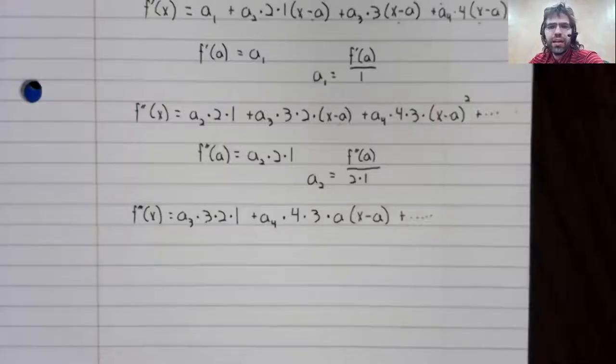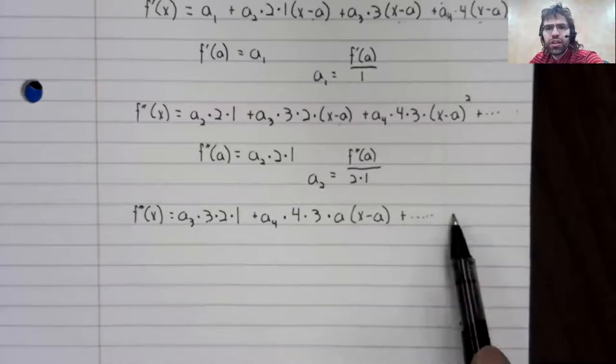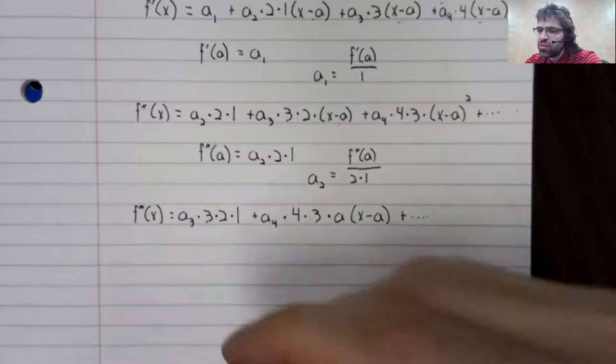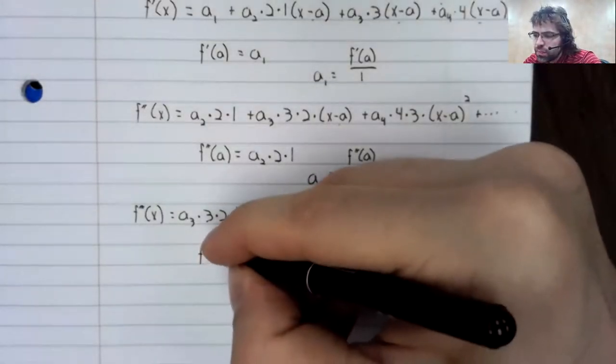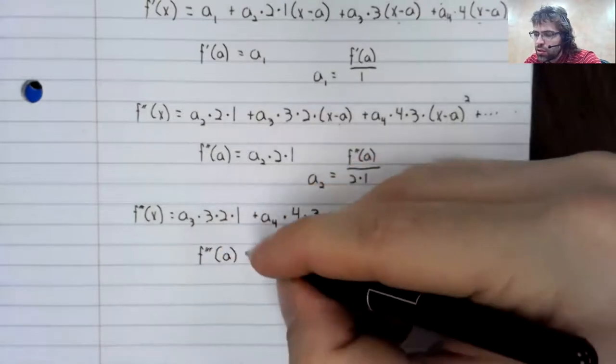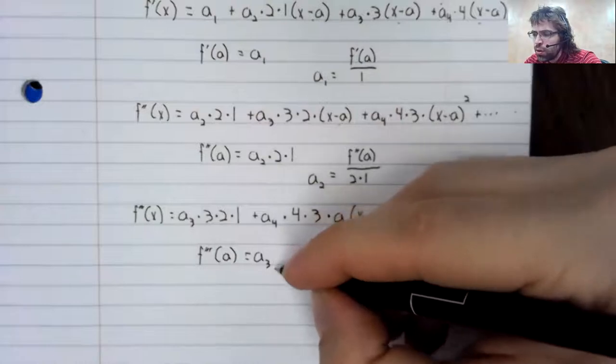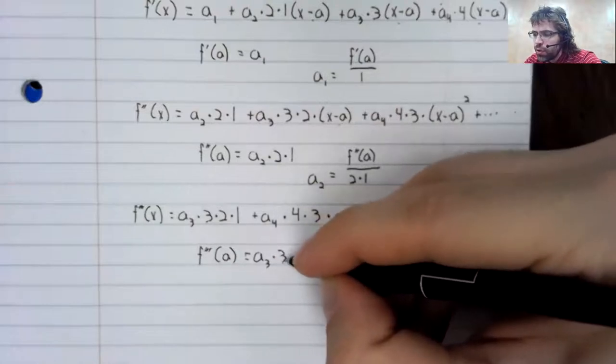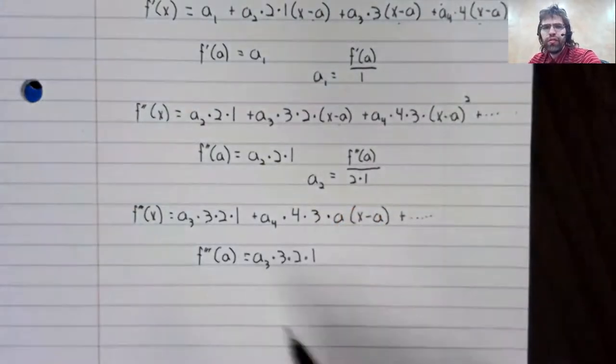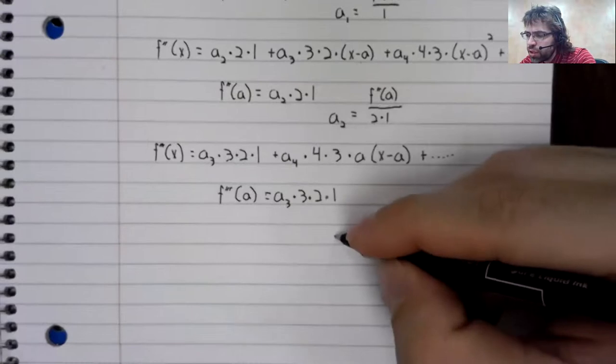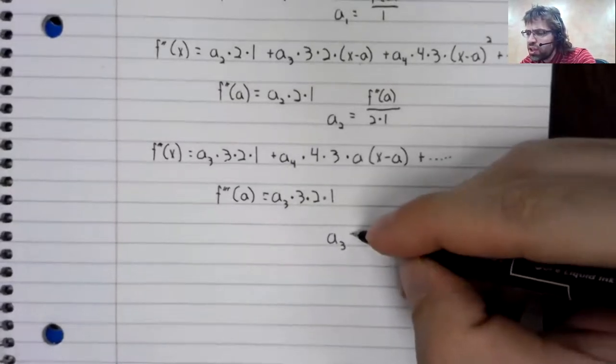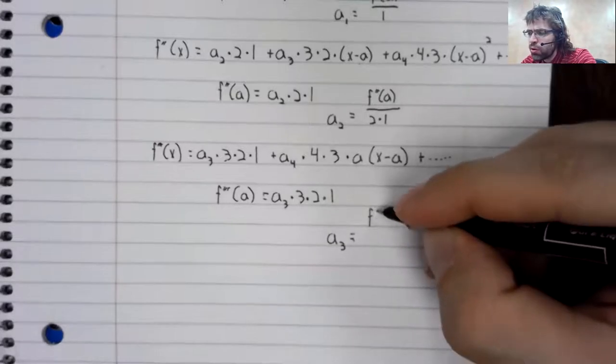So a sub two is the second derivative divided by two times one. Take the third derivative. Plug a in, everything turns to zero, except for this. So once more, we are enabled to solve for this coefficient. And you can perhaps see the pattern that's emerging.